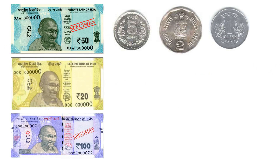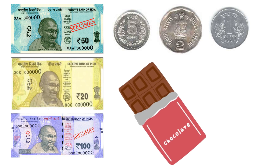Now let me see how much money you have got. So you have got notes of rupees 50, rupees 20, rupees 100, and coins of rupees 5, rupees 2 and rupees 1. Now tell me Avnika, this chocolate bar costs rupees 25. How will you pay?